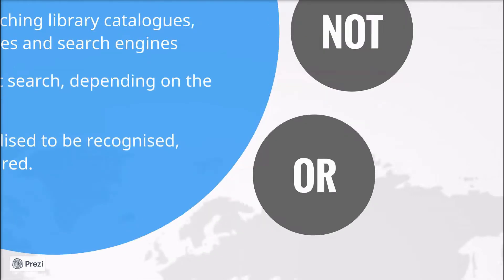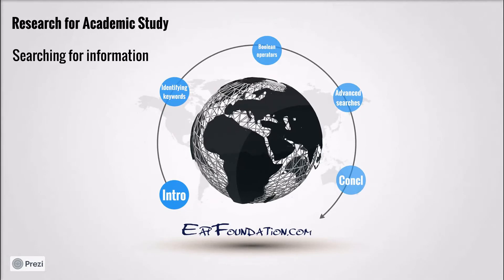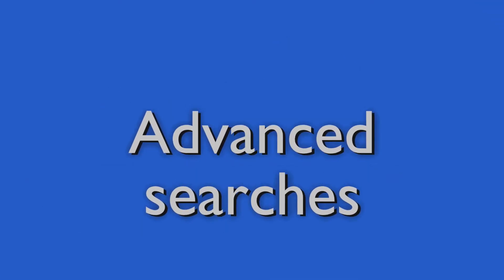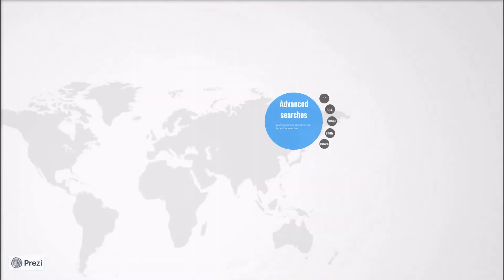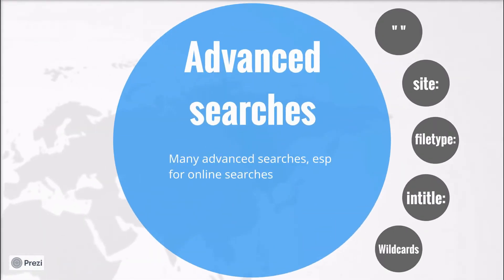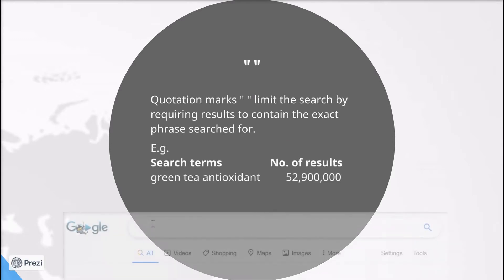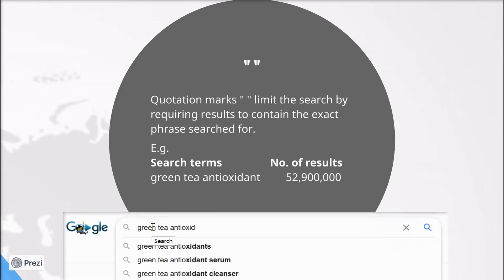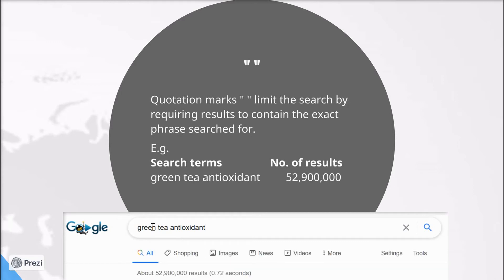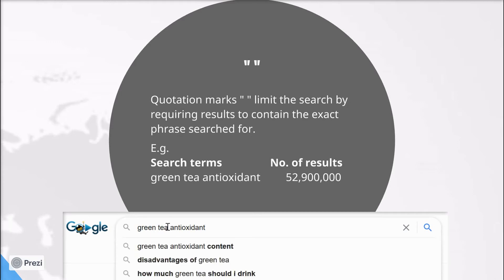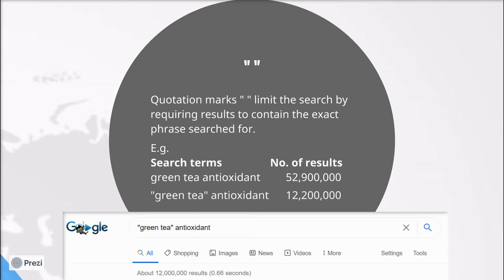Finally, let's take a look at advanced searches. These are especially useful for online searches. The first of these is quotation marks, which limit the search by requiring results to contain the exact phrase searched for. This one actually works not only in search engines but library catalogues and databases. So for example, my search is for green tea and antioxidant, and this produces over 52 million results. However, the results I'm interested in are about green tea specifically, not just results with green somewhere and tea somewhere else. So if I put green tea in quotation marks, meaning those two words must occur together, then it reduces the results to just over 12 million.